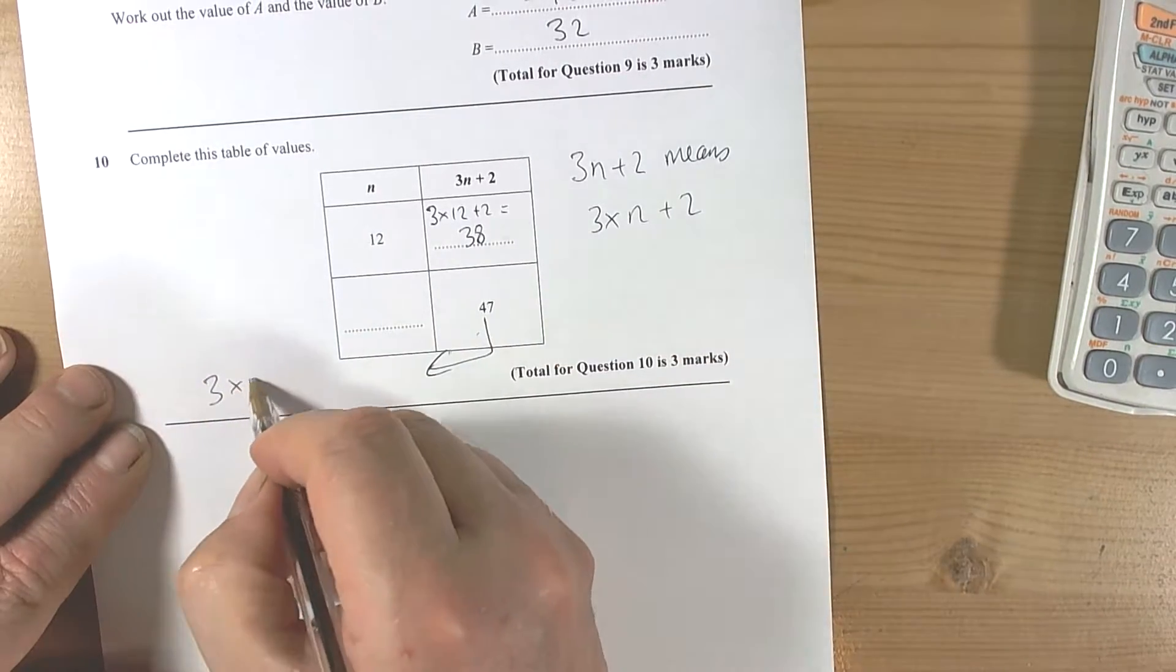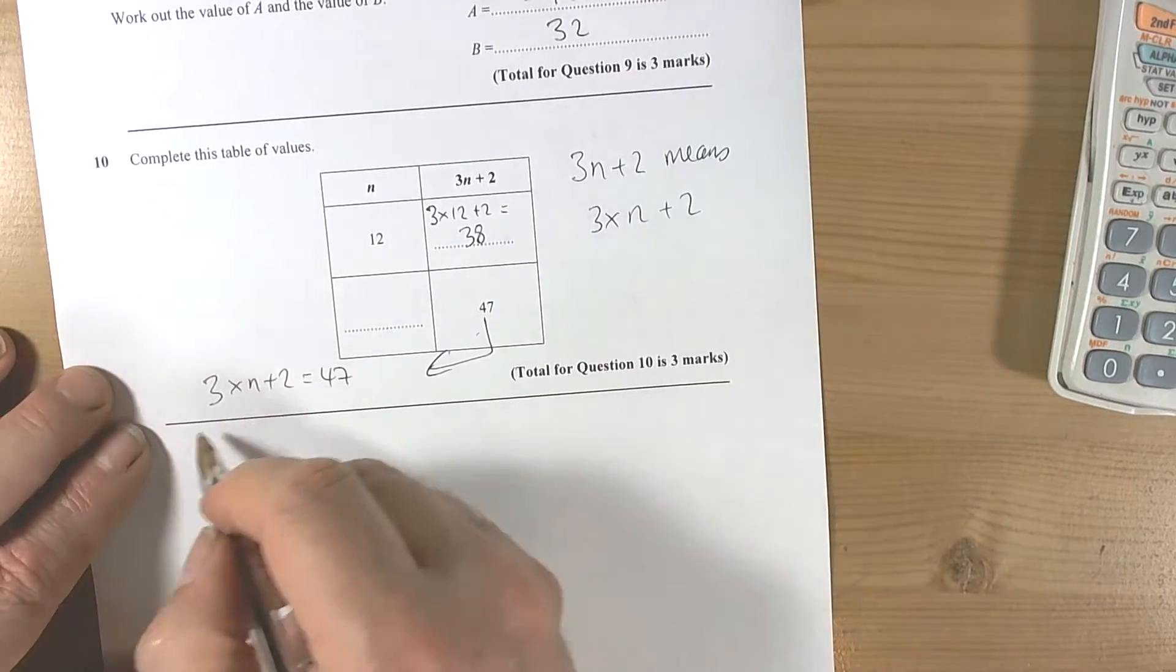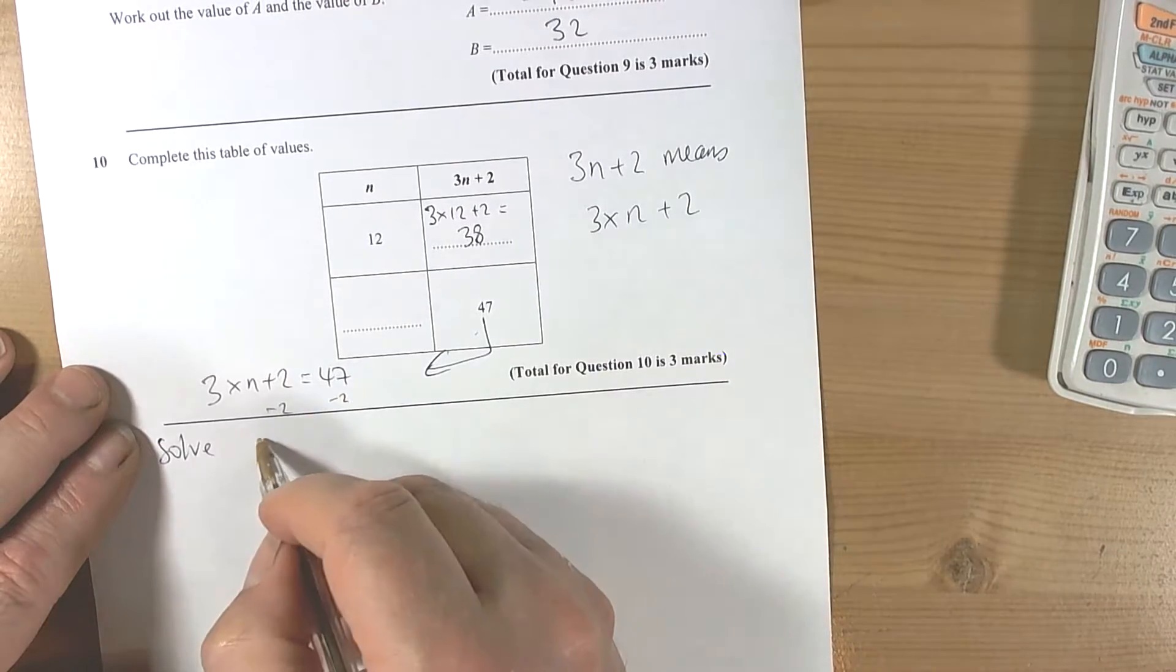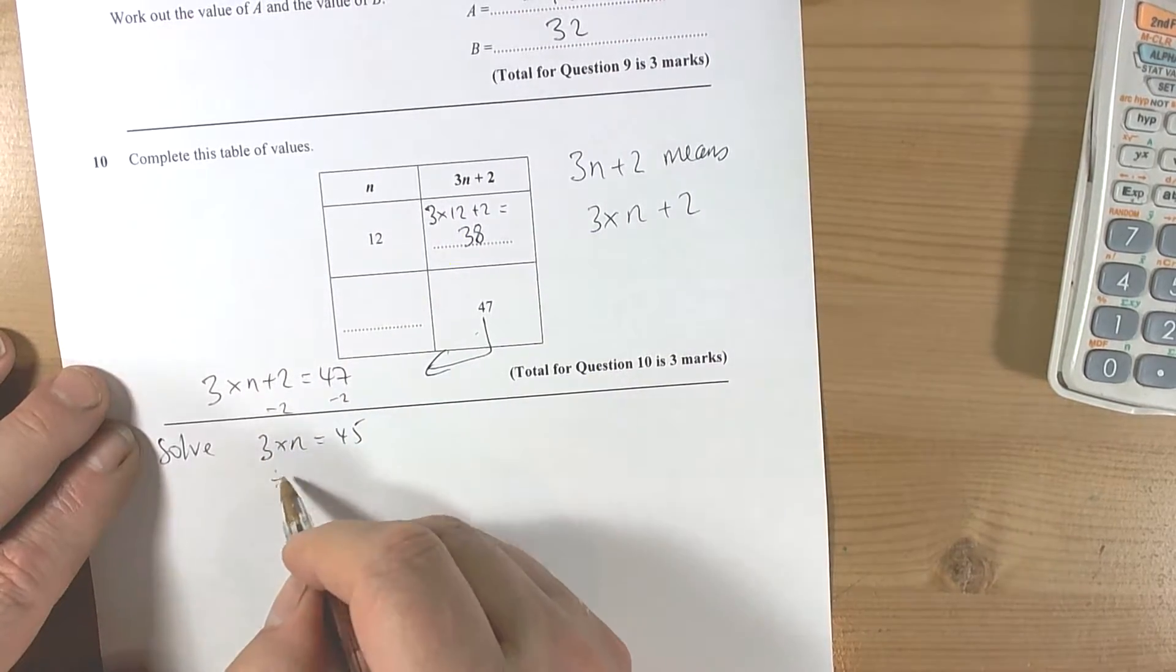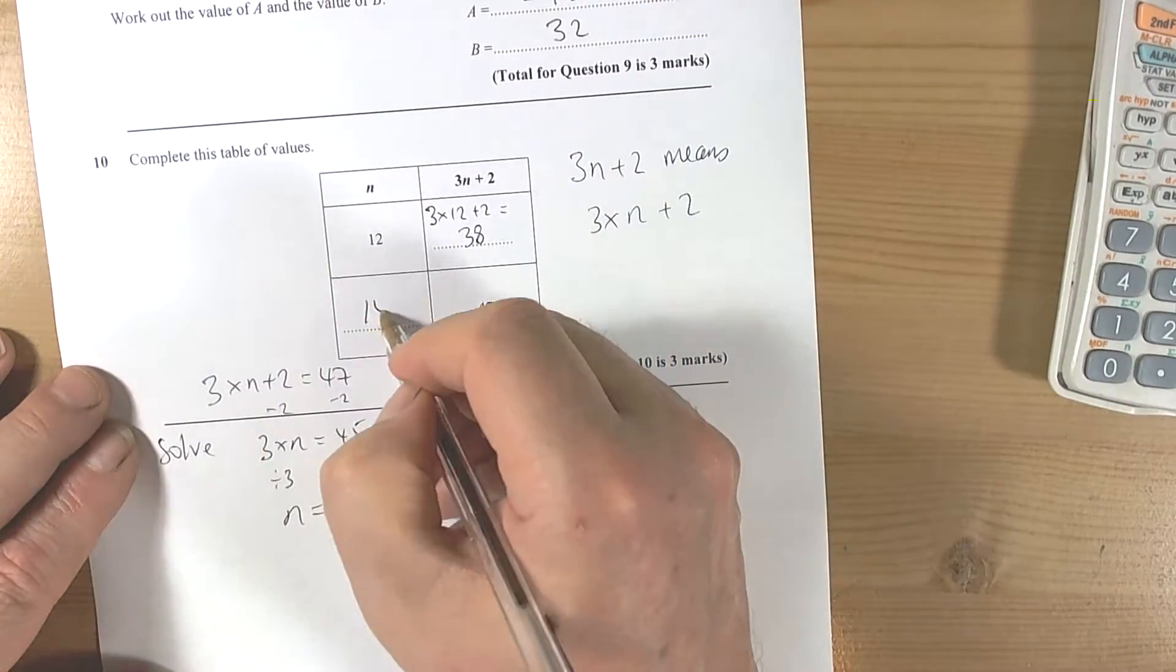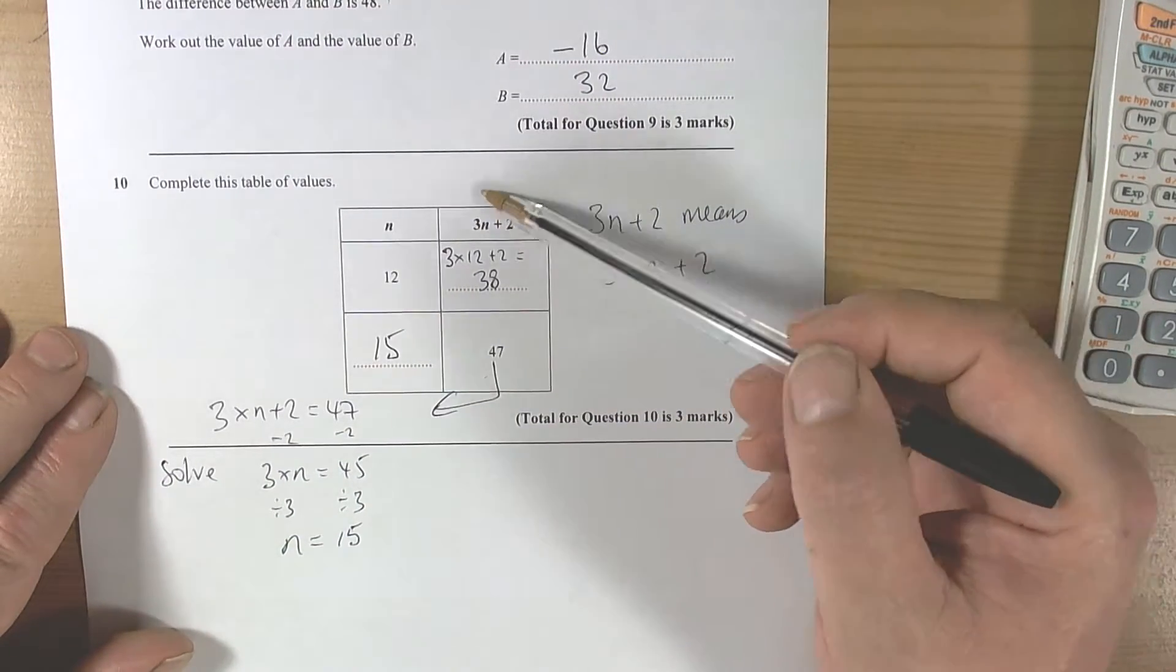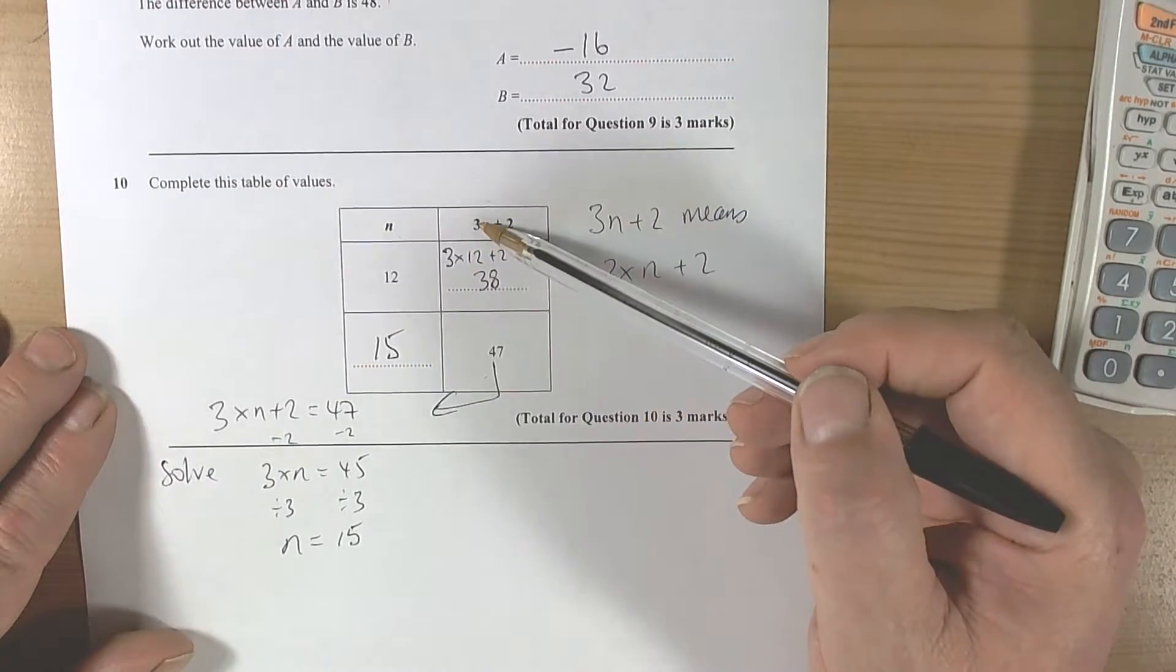And to go this way, well, it's telling us that three times something plus 2 must equal 47. So solve, take away 2 from both sides, so three times n equals 45. Divided by 3, n must be worth 15. So again, it's about recognizing what these rules tell us.